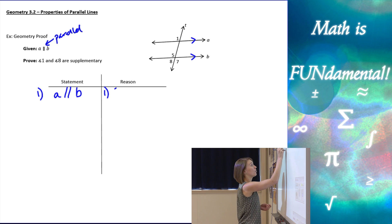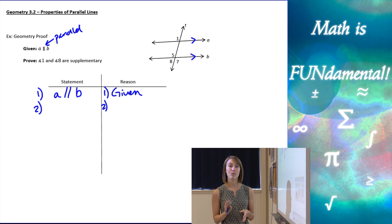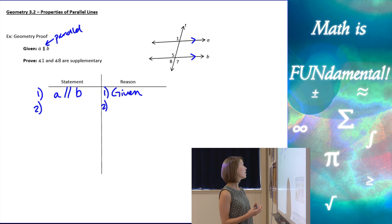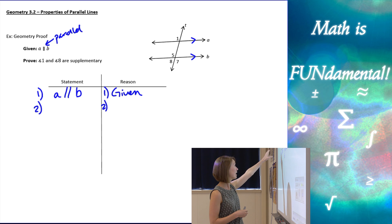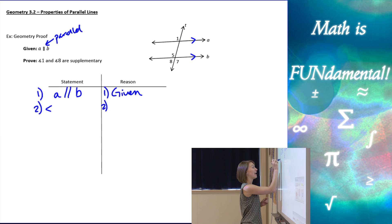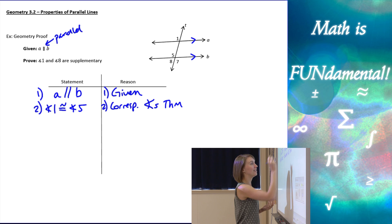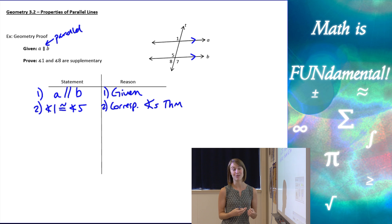All proofs start with the given information: line a is parallel to line b — that's step one, given. Now we need to be a little creative. Even though what we want to prove is about angles one and eight, we're given angles five and seven on our diagram, so we'll likely use those. I want to get from angle one to angle eight, so let's start: angles one and five are corresponding angles, so angle one is congruent to angle five by the Corresponding Angles Theorem.